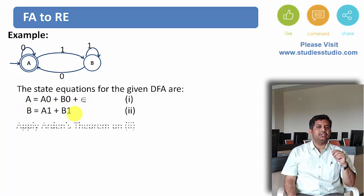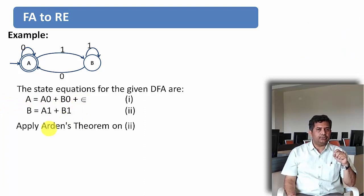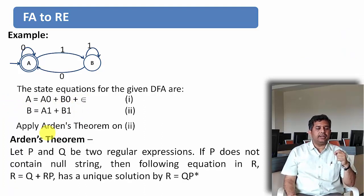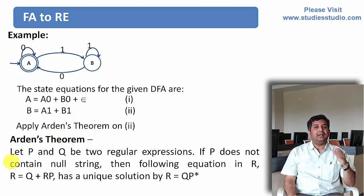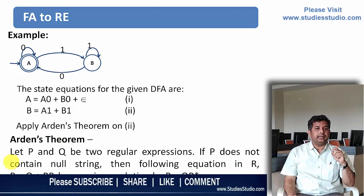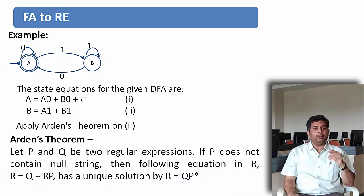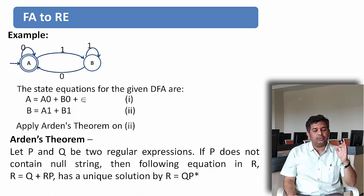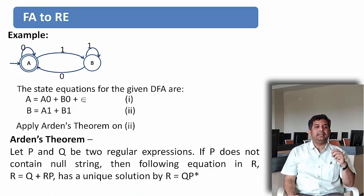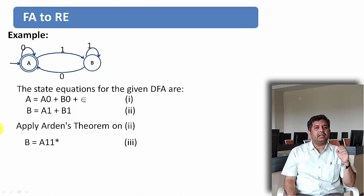Now apply Arden's theorem on equation number 2. Recall: if P and Q are two regular expressions, P doesn't contain a null string, and your equation is in the form R equal to Q plus R·P, then the unique solution is R equal to Q·P star. After applying Arden's theorem on equation 2, we get B equal to A·1·1 star.